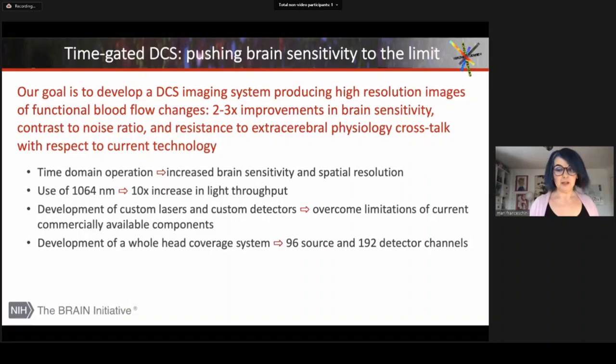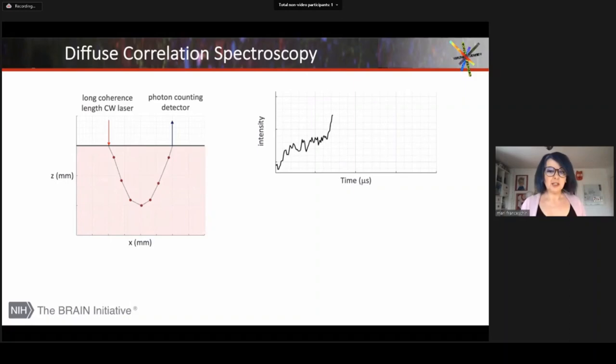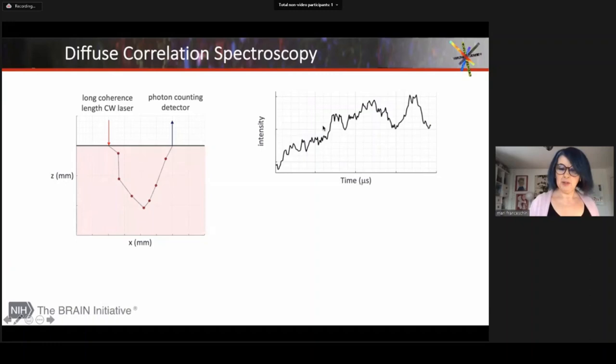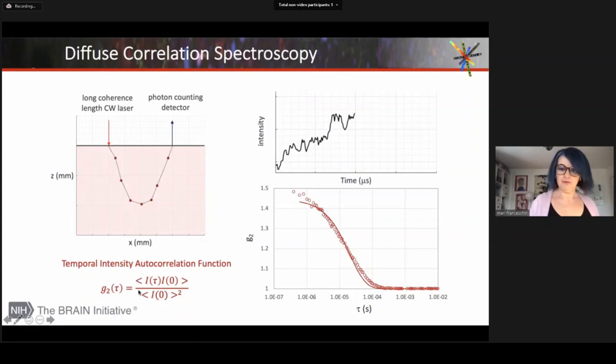Very briefly, diffuse correlation spectroscopy is a near infrared spectroscopy method that directly measures blood flow by measuring the intensity fluctuation generated by the speckle interference with the moving scatterers. This fluctuation gives us the temporal intensity autocorrelation function G2 and its decay is proportional to blood flow. Faster is the decay, faster is the blood flow.